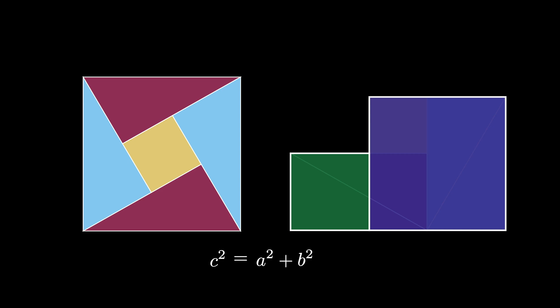Therefore, if we have a right triangle with side lengths A, B, and hypotenuse C, we have A squared plus B squared equals C squared. This is the Pythagorean theorem and is the famous behold proof due to Bhaskara.